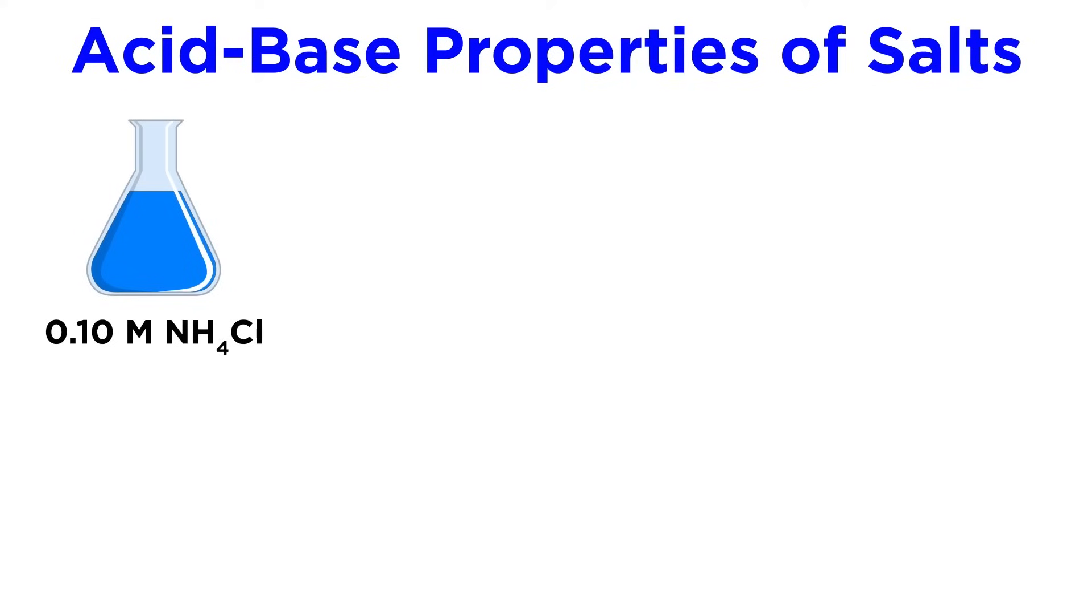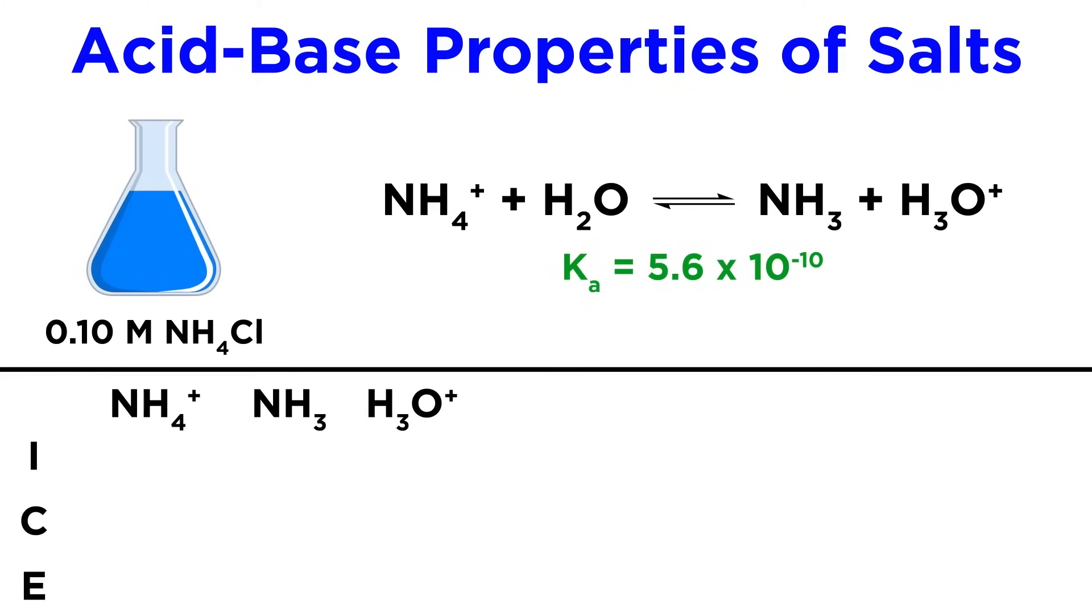Say we have 0.1 molar ammonium chloride. This will leave ammonium ions in solution, which will protonate water molecules to produce hydronium to some degree, as dictated by the Ka we just calculated. Let's make an ICE box. We have 0.1 and essentially 0 for the other two substances, considering the auto-ionization of water to be negligible. Then we are subtracting x on the left and adding x on the right.